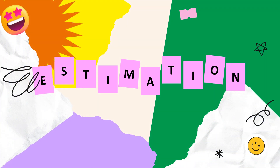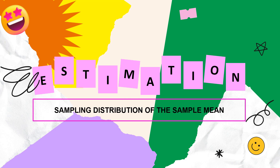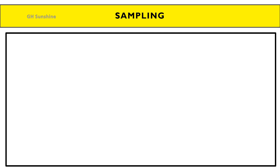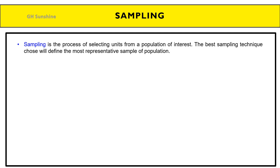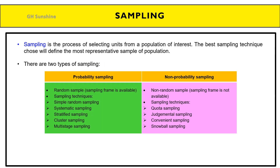Hi guys, assalamualaikum. Now we proceed to topic 2, Estimation, but first we focus on the sampling distribution of the sample mean. Sampling is the process of selecting units from a population of interest. The best sampling technique chosen will define the most representative sample of the population. There are two types of sampling: probability sampling and non-probability sampling. Which type to use is based on the sampling frame — if available, we use random sampling; if not, we use non-random sampling.